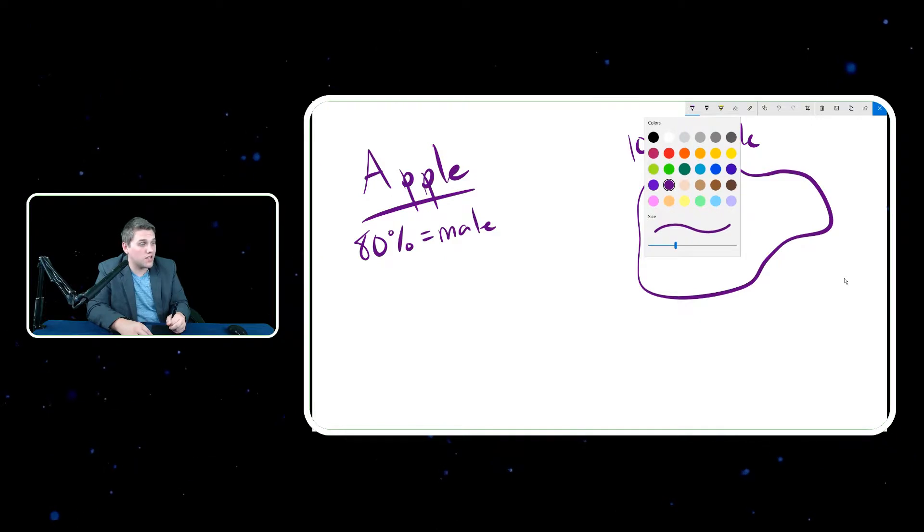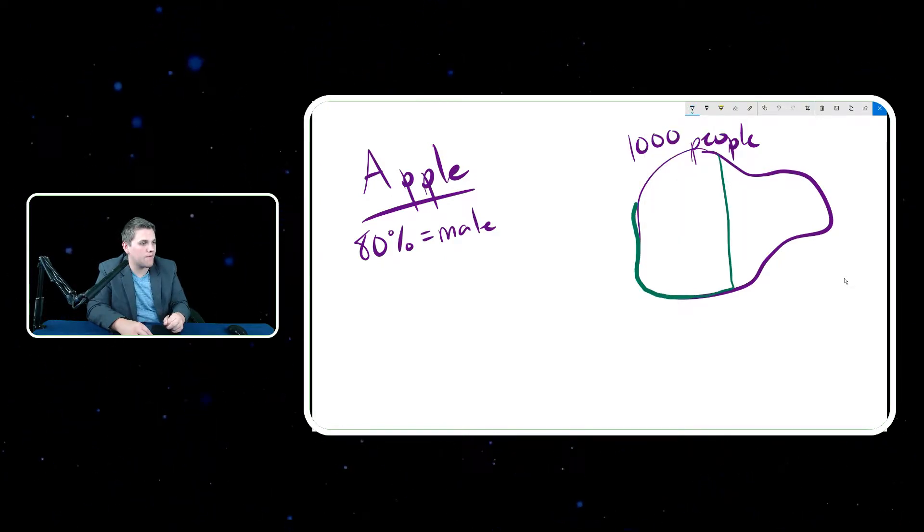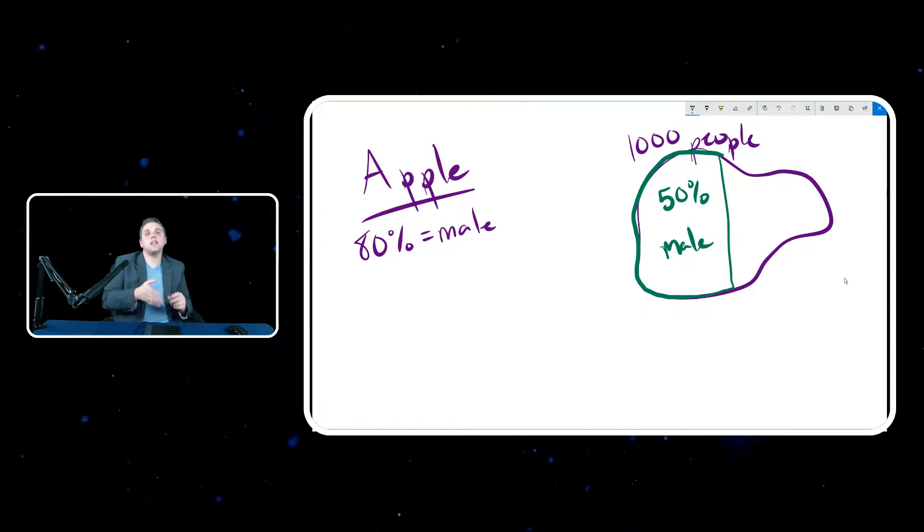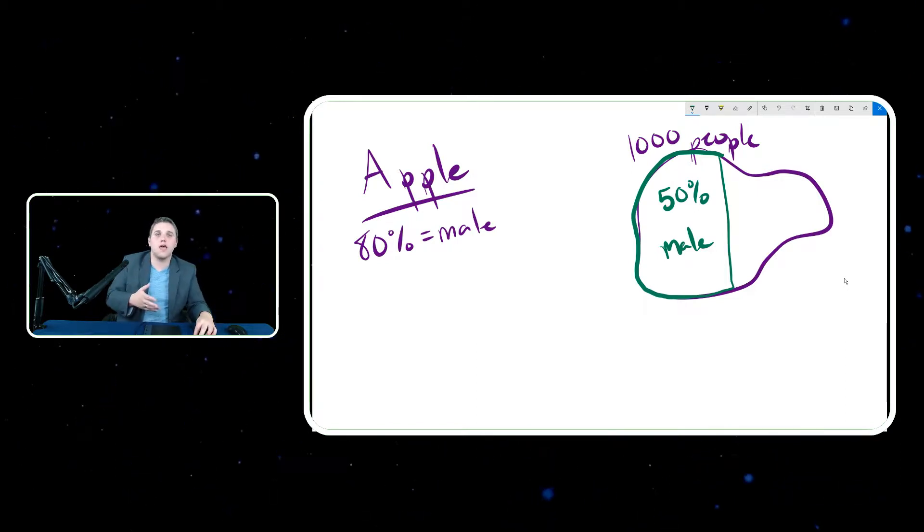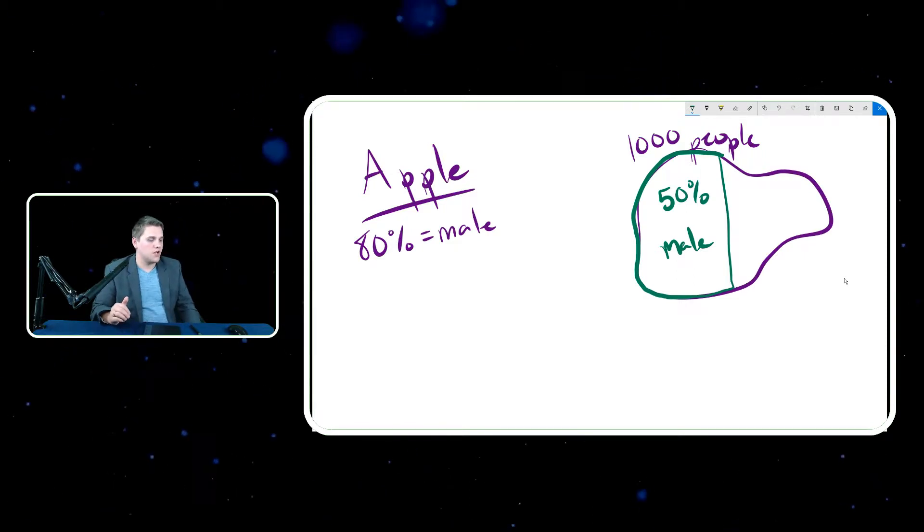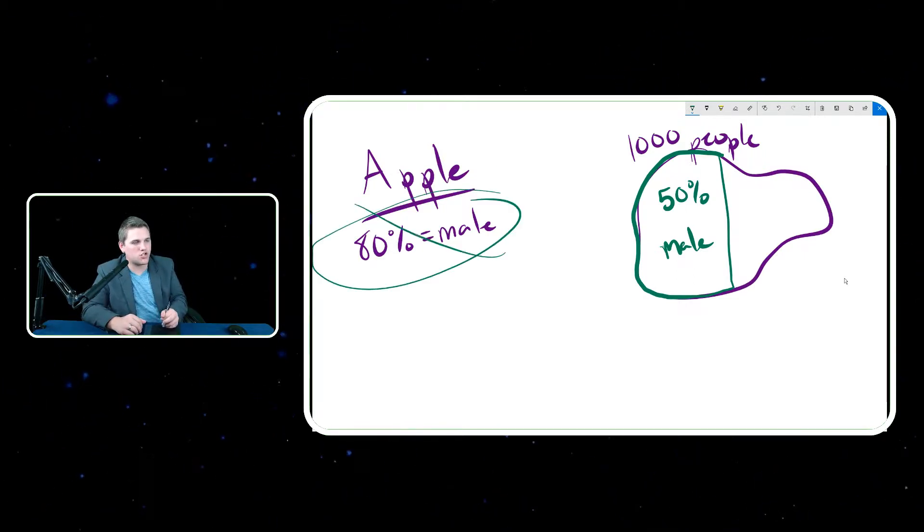And I found that literally exactly half of them, so 50%, were male. Now a t-test is a way of showing that that value is statistically significant. Basically you're saying yes, this sample shows that the previous hypothesis is false, that it's not true that 80% of the population is male. We're trying to prove that this theory is wrong.